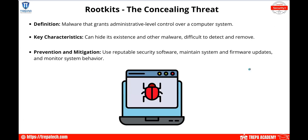Rootkits are malware that grant administrative-level control over a computer system. They can hide their existence and other malware, making them very difficult to detect and remove. Rootkits can be installed at the firmware level, and many antivirus and anti-malware tools only scan at the OS level — they don't look deep into the hardware firmware.